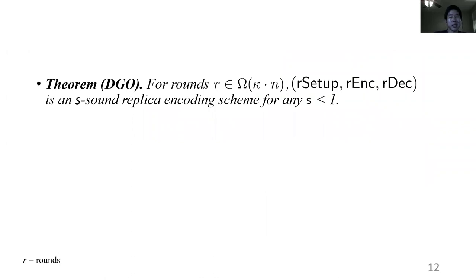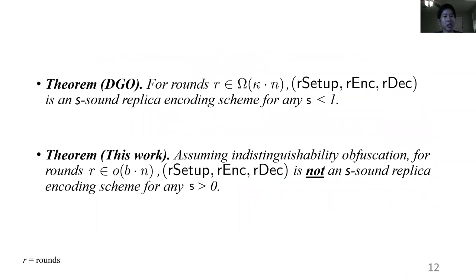And so in the work last year, they show that for rounds equal to omega of kappa times n, this is a secure replica encoding scheme for any constant s less than one. And what our first contribution is, is actually a lower bound on the efficiency of this construction, where we show that for rounds in little o of B times n, this construction is not an s-sound replica encoding scheme. But if you look closely at these two theorems, you can see that they're actually kind of contradictory, in that for our lower bound, we claim that the number of rounds needs to scale with the number of blocks B. But this factor is not present in the actual construction of replica encodings in the original theorem.